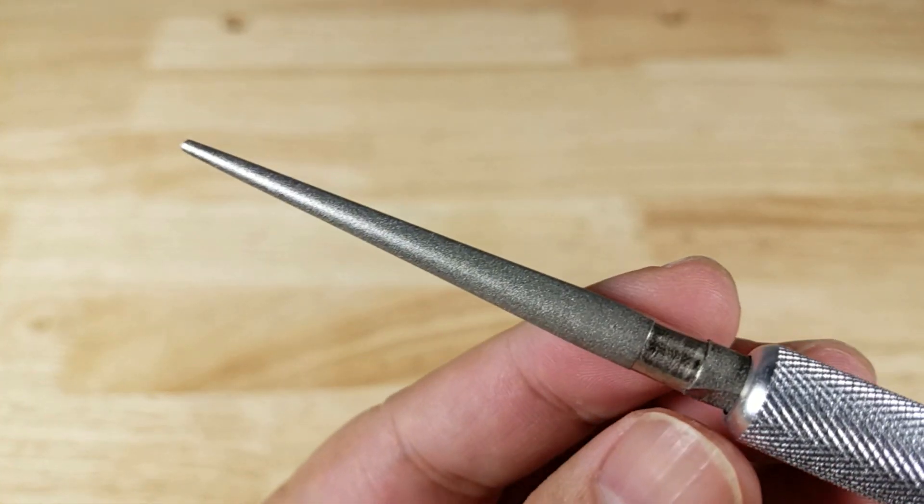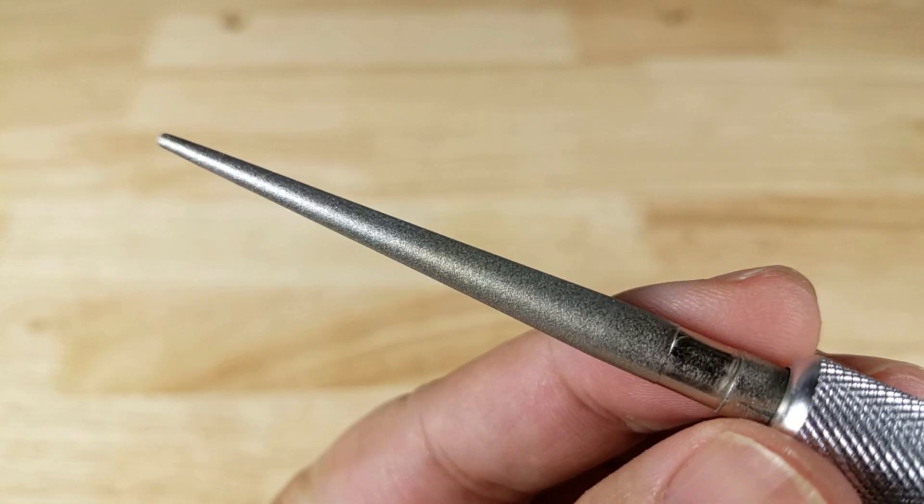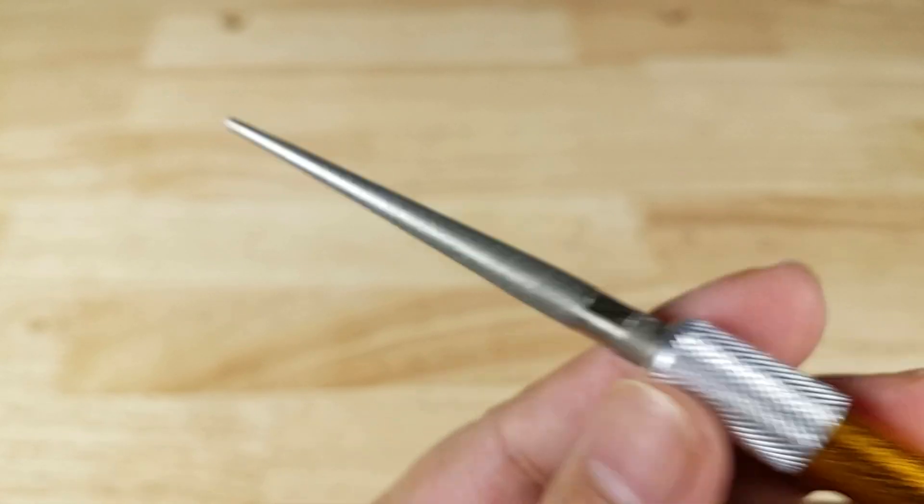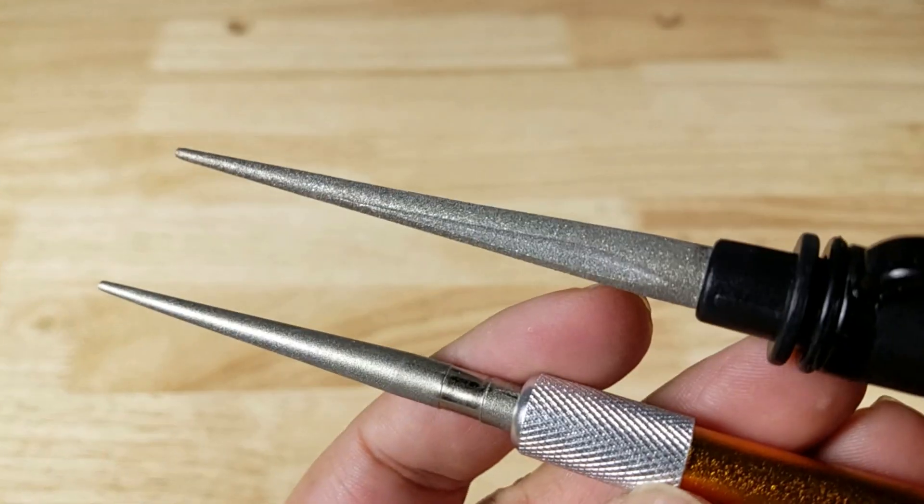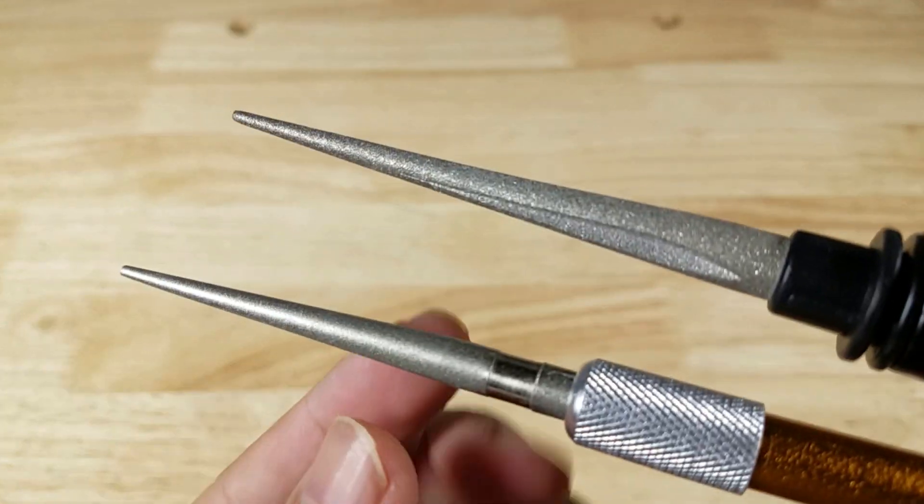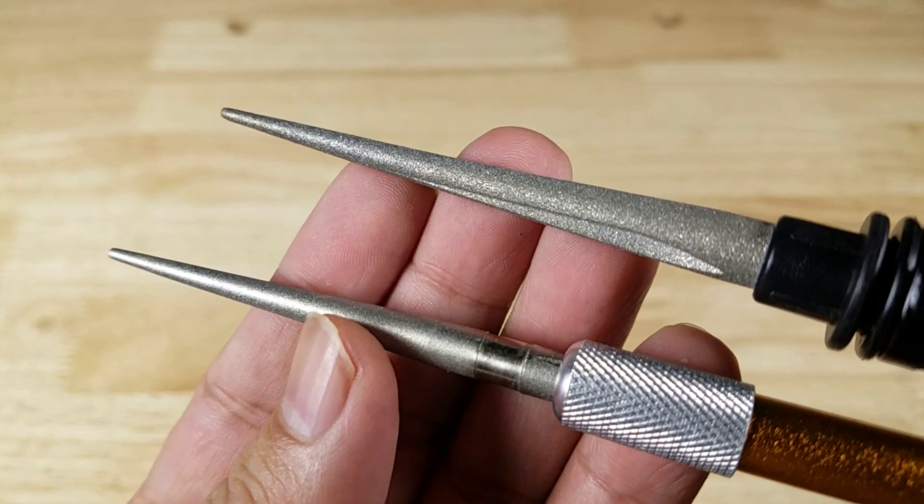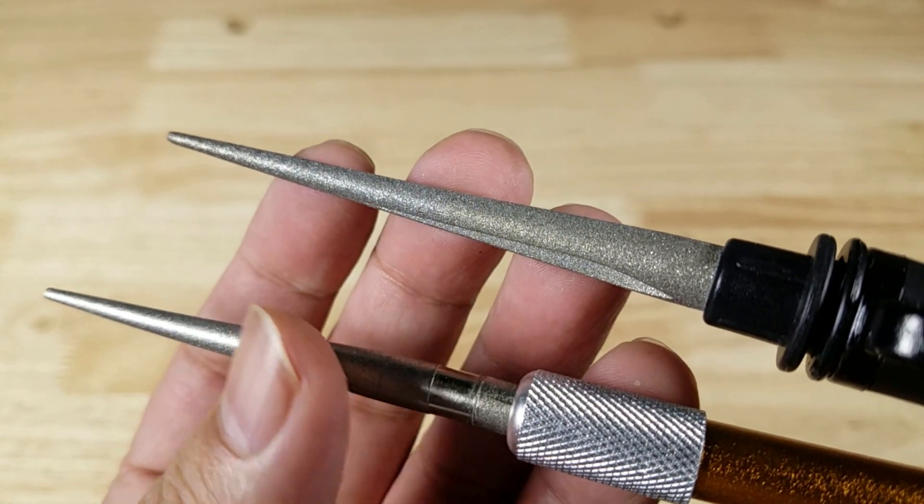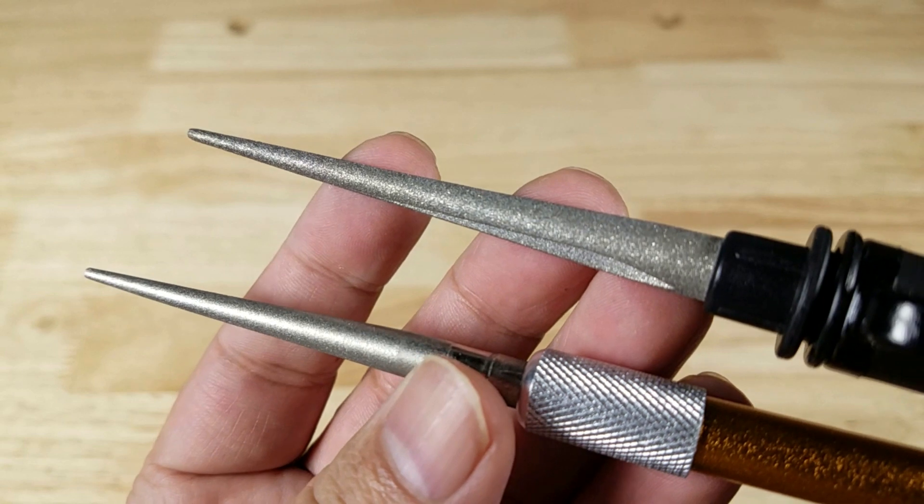If you compare it to the Smith sharpening rod, which is a medium grit 400 grit, you can put them back to back and be able to see the difference there. All right, so if this is a 400 on the bottom, this might be like a 280—I don't know, maybe a 300—but you can tell it's a lot rougher.